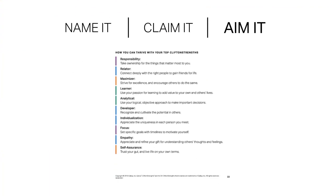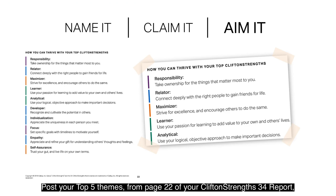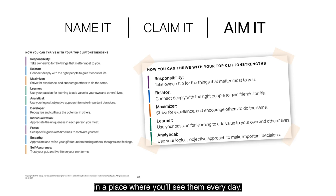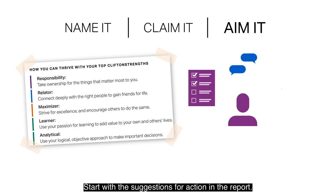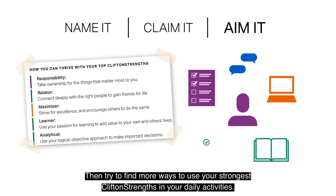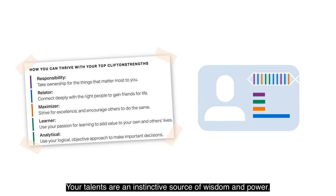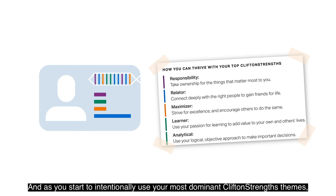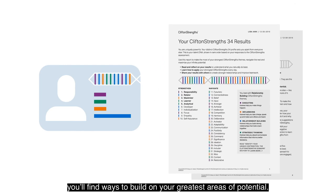Then, aim it. Post your top five themes from page 22 of your CliftonStrengths 34 report in a place where you'll see them every day. Start with the suggestions for action in the report, then try to find more ways to use your strongest CliftonStrengths in your daily activities. Your talents are an instinctive source of wisdom and power, and as you intentionally use your most dominant CliftonStrengths themes, you'll find ways to build on your greatest areas of potential.